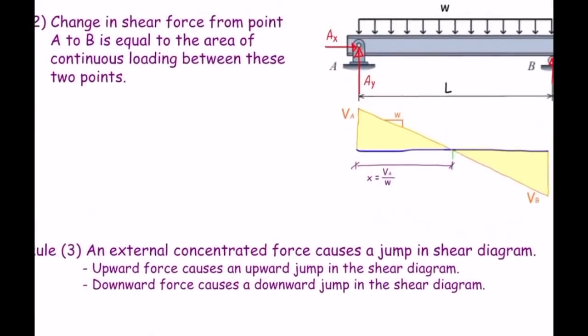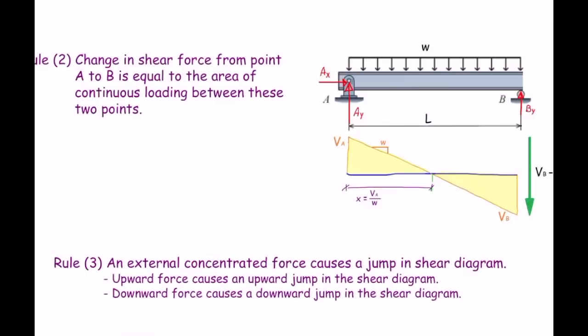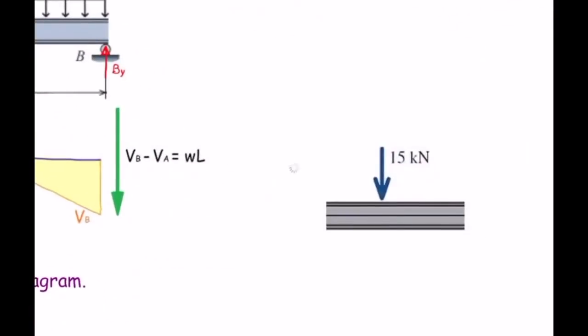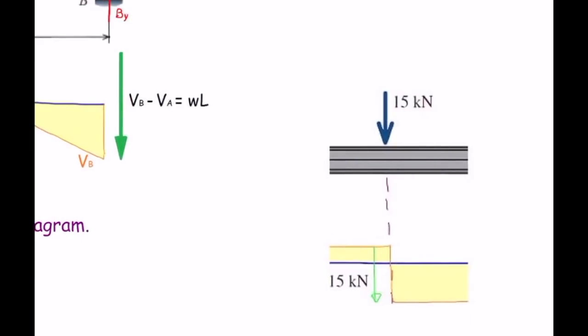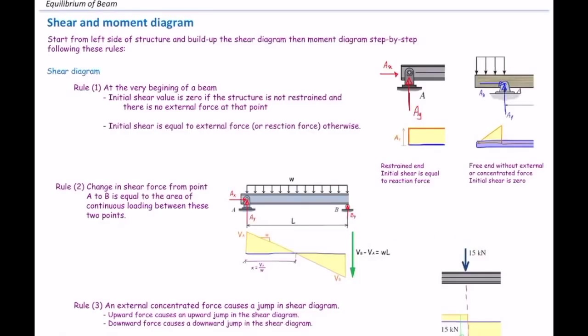Rule number three: an external concentrated force causes a jump in the shear diagram. An upward force causes an upward jump; a downward force causes a downward jump. For example, if there is one concentrated load acting somewhere on the beam, the shear diagram jumps at that location. Because the force acts downward, the jump will be downward.